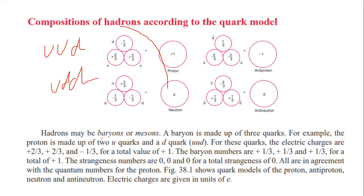Hadrons may be baryons or mesons. A baryon is made up of three quarks. For example, the proton is made up of two u quarks and one d quark. The electric charges are plus 2/3, plus 2/3, and minus 1/3 for a total value of plus 1. The baryon numbers are plus 1/3, plus 1/3, and plus 1/3 for a total of plus 1. The strangeness values are 0, 0, 0, so the strangeness number is 0. All are in agreement with the quantum numbers of the proton.